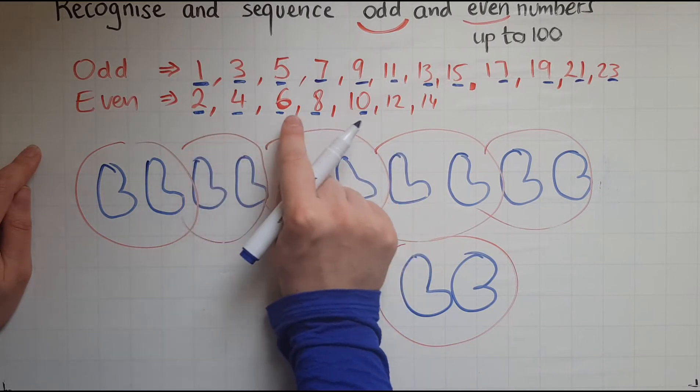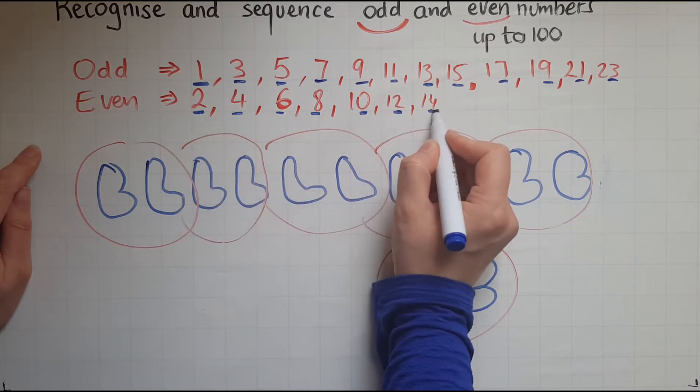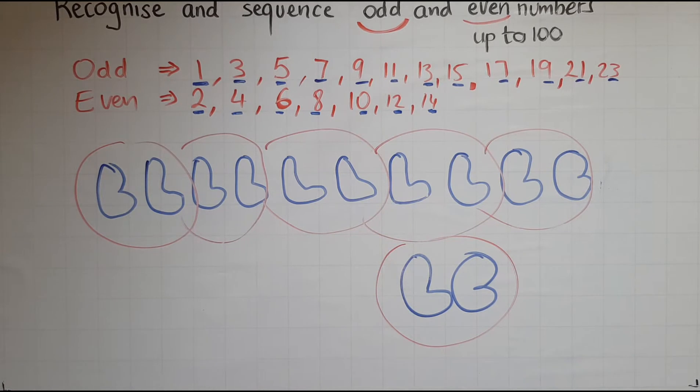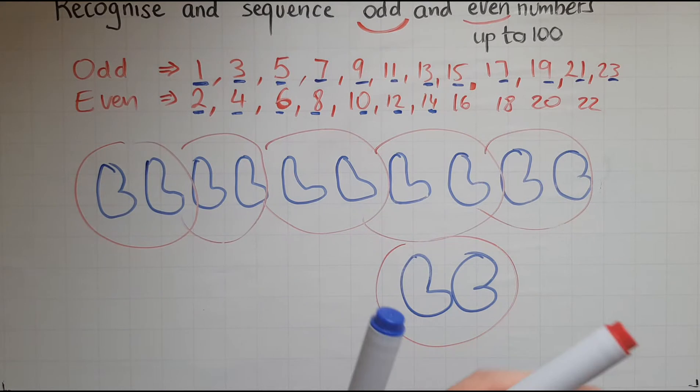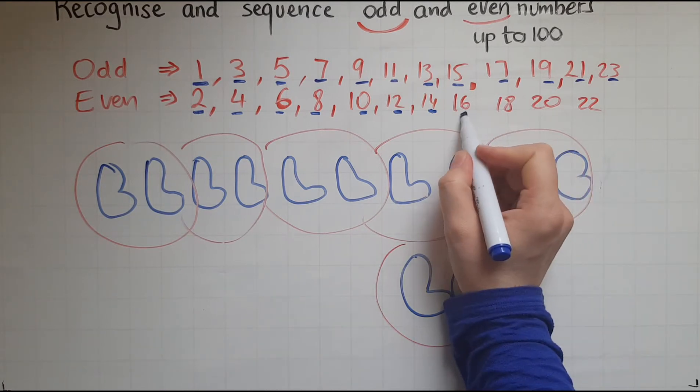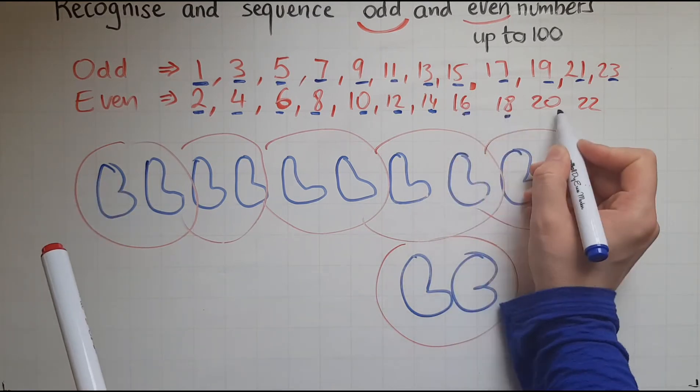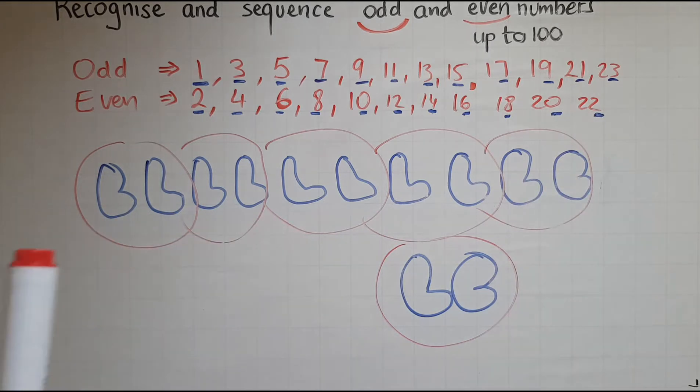So 0, 2, 4, 6, 8, 2, 4, 16 as well, 18, 20, 22. So if the unit is even, the whole number is even.